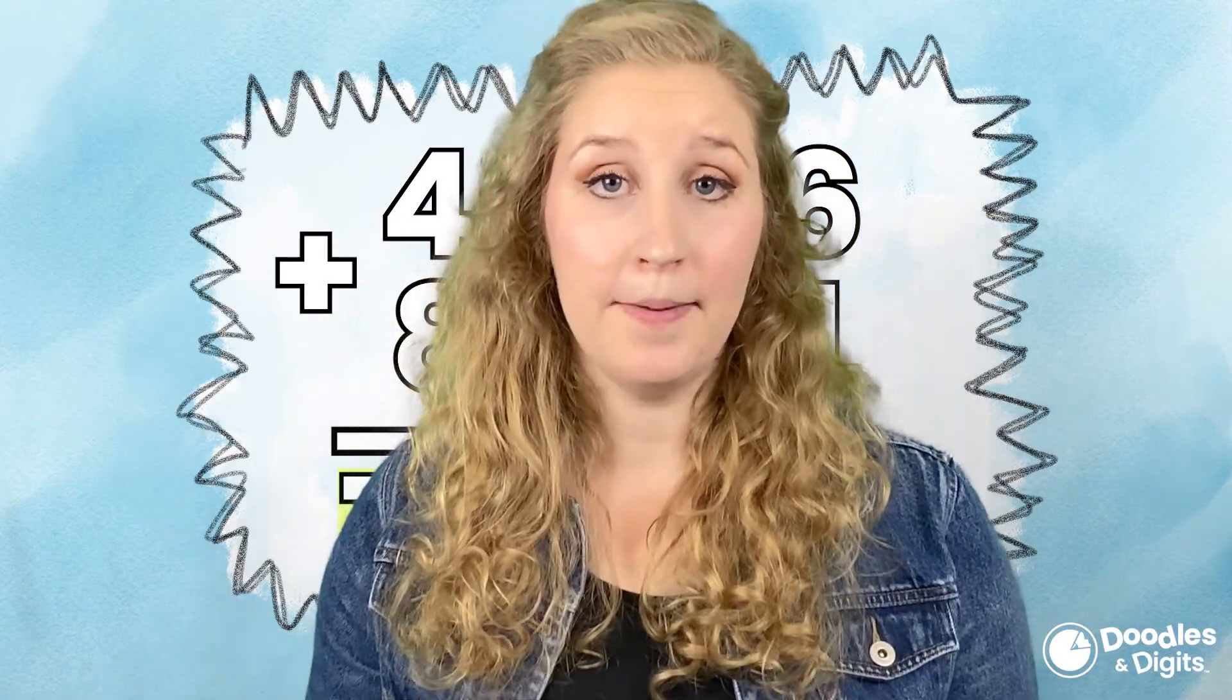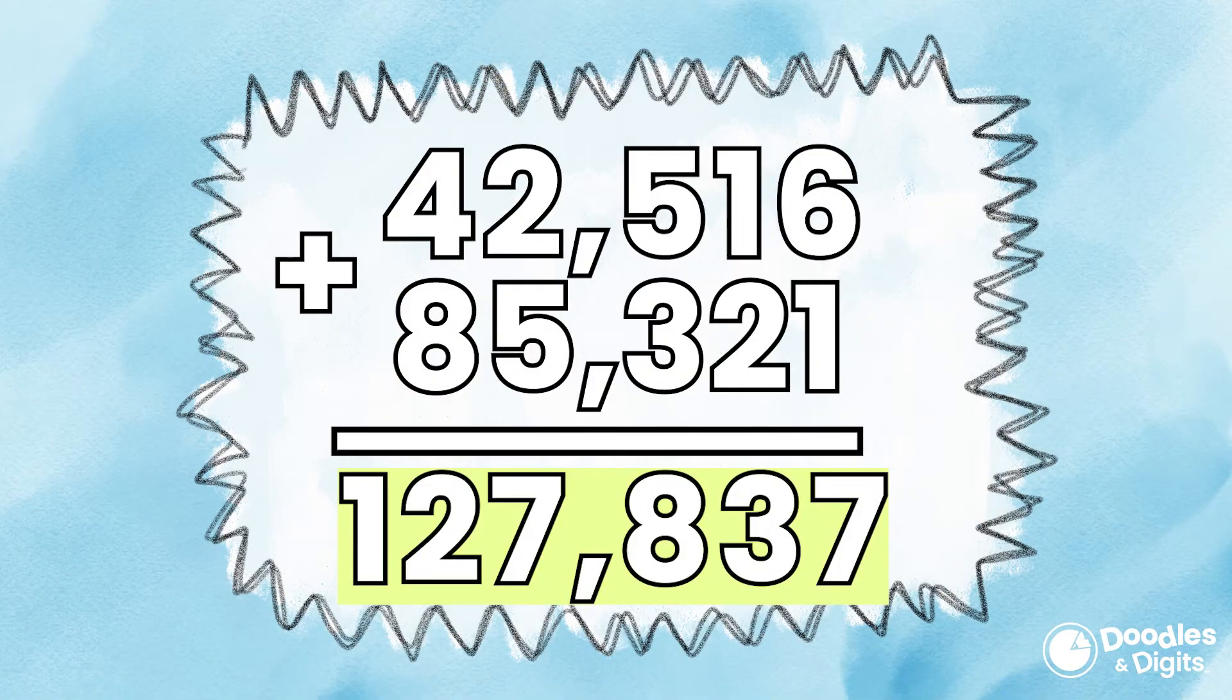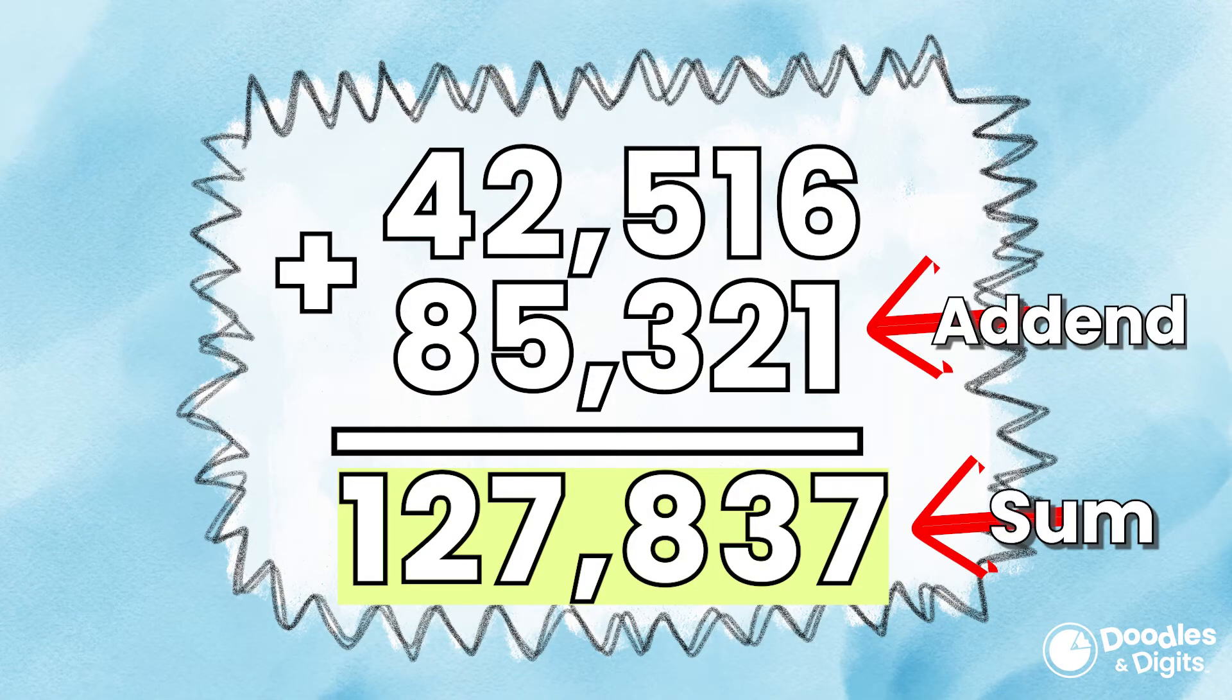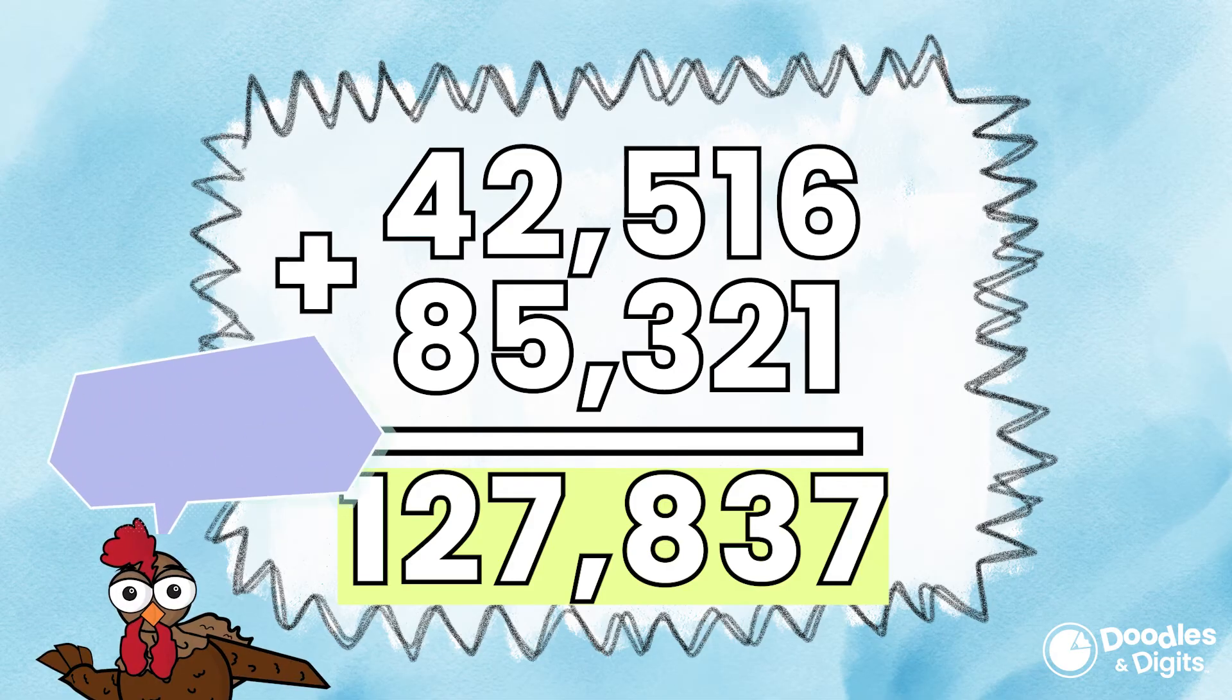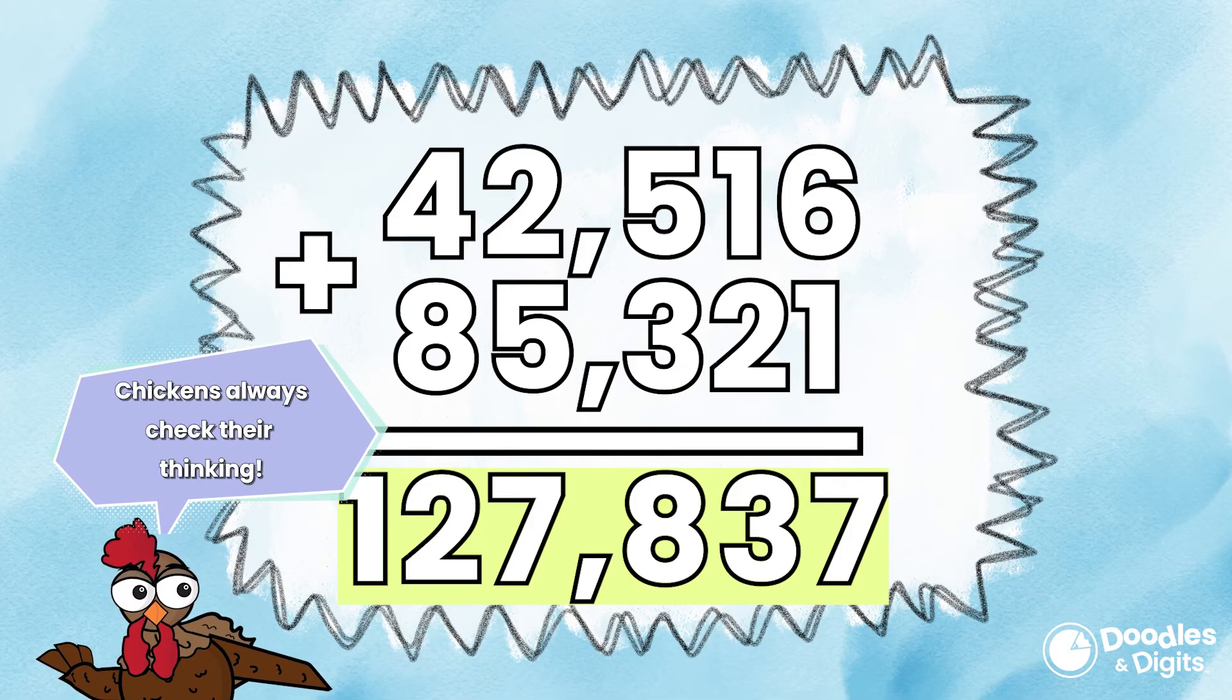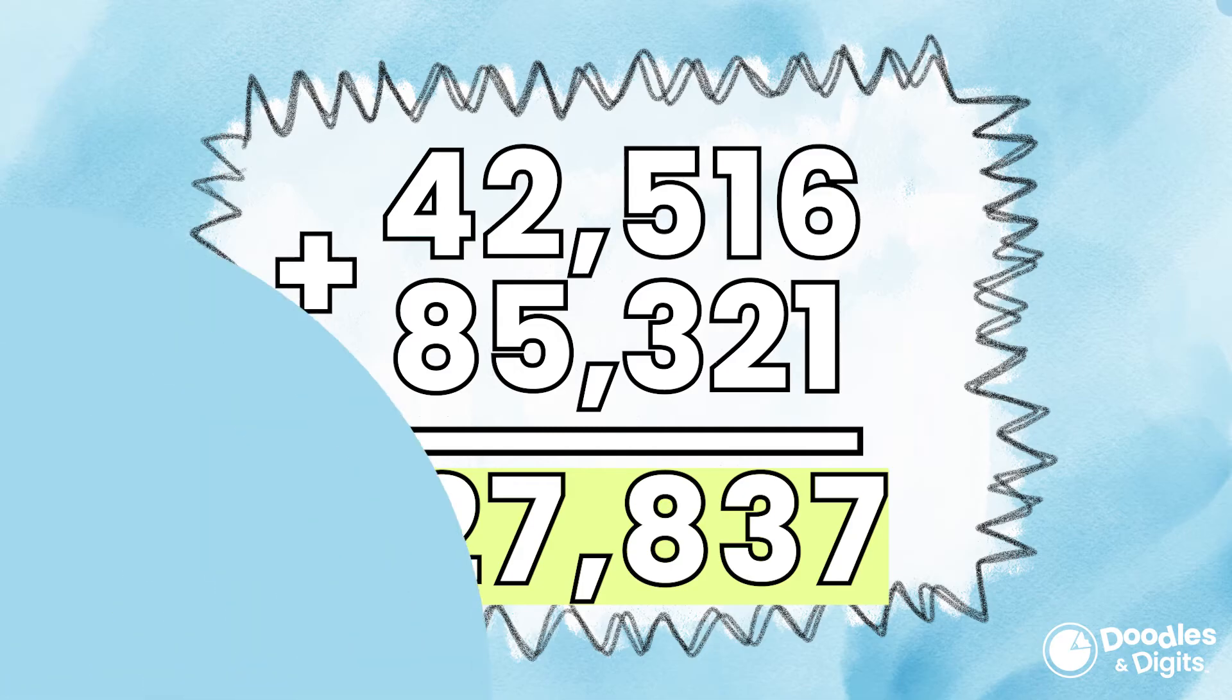So we've solved the problem. Is there a way to check my thinking? You can check your thinking by taking the sum or the answer of an addition problem and subtracting it from the addend or the number right above it. So 127,837 minus 85,321 should be 42,516 to check your thinking.